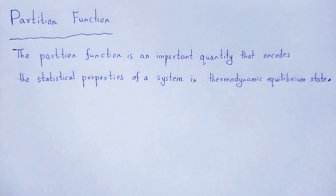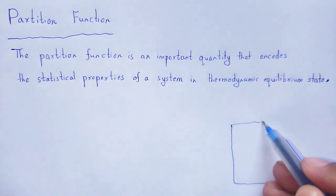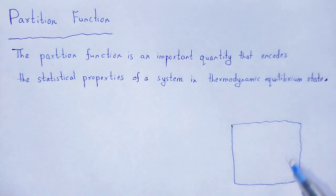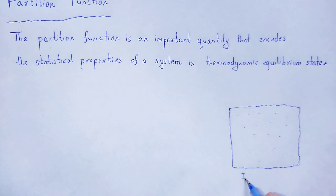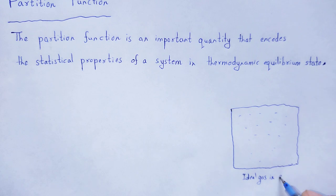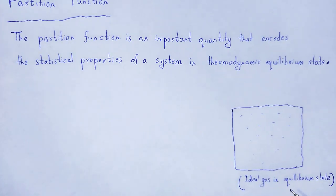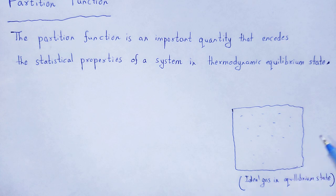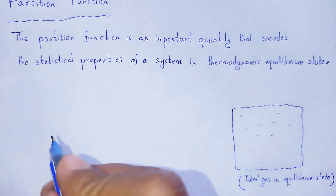In the previous video lecture, we have already discussed about Maxwell-Boltzmann distribution law. According to Maxwell-Boltzmann distribution law, if we consider a container in which there are ideal gas, that ideal gas in equilibrium state, so how the energy is distributed among the particles or atoms or molecules — whatever it may be — present inside that system, that can be evaluated by using Maxwell-Boltzmann distribution law.